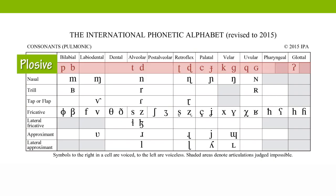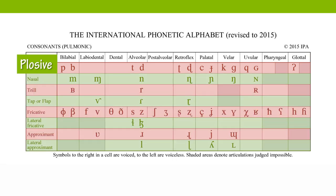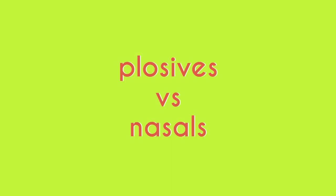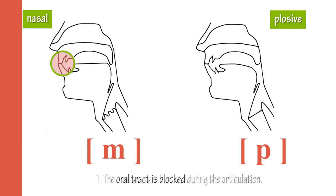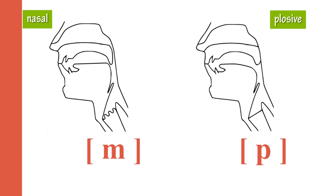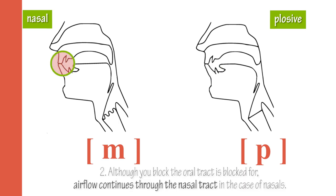To understand plosives, it helps to compare them with other closely similar manners of articulation. For example, comparing plosives and nasals: the similarity is that in both, the oral tract is blocked. If you look at the first nasal 'ma' and compare it to 'pa,' the lip position is exactly the same. The difference is that 'pa' requires opening of the lips for the release, whereas for 'ma,' the release happens through the nasal cavity. This is why a nasal is not plosive — it's not instant, and it can be pronounced continuously.